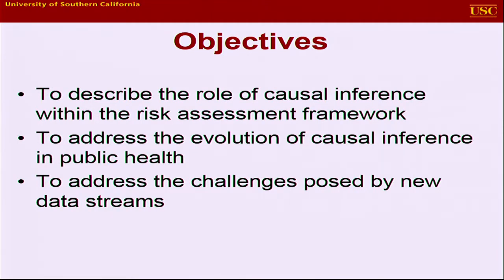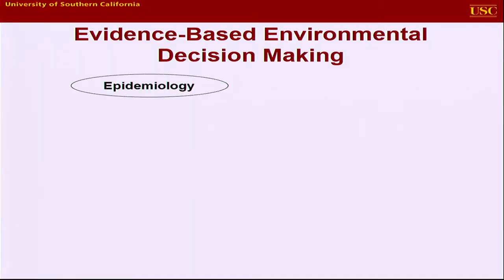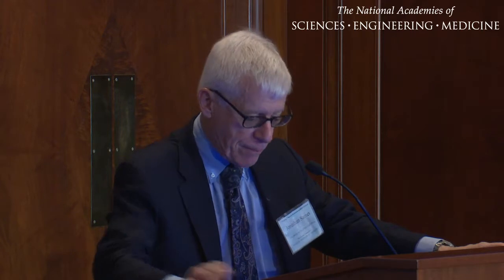I know if I pointed to anybody in this room, perhaps except for a philosopher or two, you would blanch if I put you to the test. And then I'm going to talk about the challenge of these new data streams, in part from my role over the last couple of years of chairing this committee that issued the report on 21st century science in January. And I also want us to be very clear about the difference between decision making and causal inference and causal inference for decision making — I think they tend to get mixed up.